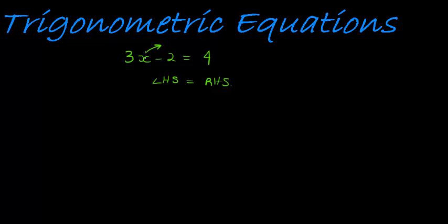For example, if I substitute 1: 3 times 1 is 3, minus 2 equals 1, and that's not what I want — I want 4. If I substitute 2: 3 times 2 is 6, minus 2 is 4. So the solution to this equation is x equals 2. If I try 3 or 4 or any other number, the left-hand side is not equal to the right-hand side.